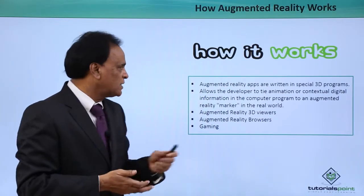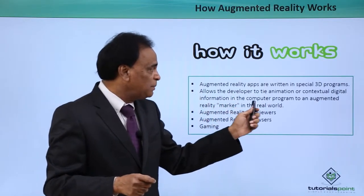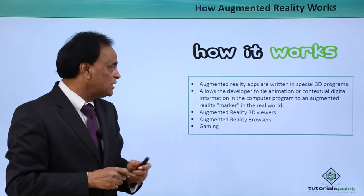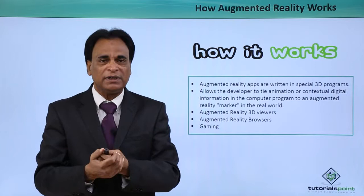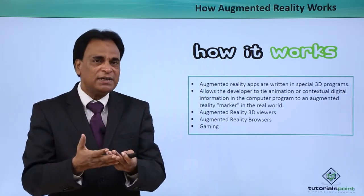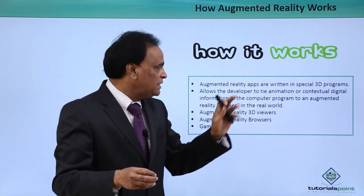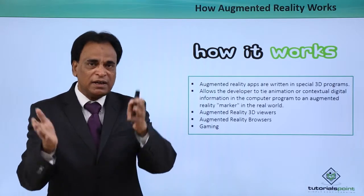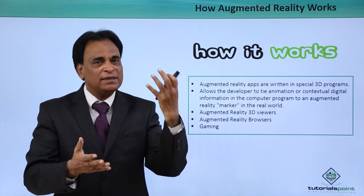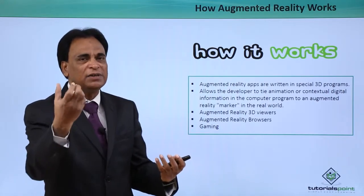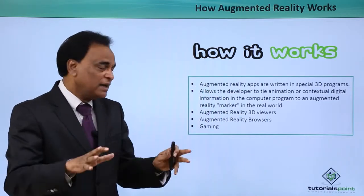How does augmented reality work? Augmented reality apps are written in special 3D programs that allow developers to tie animation or contextual digital information to an augmented reality marker in the real world. These 3D programs create digital content that is integrated with contextual information from the digital world to create an artificial environment, which is then integrated into the real world environment.